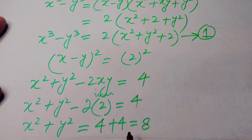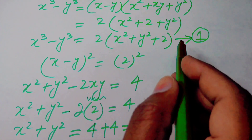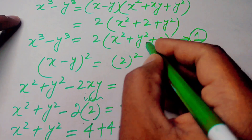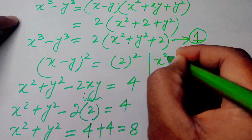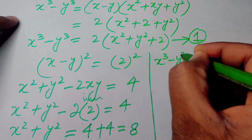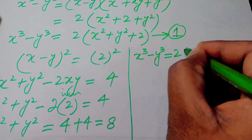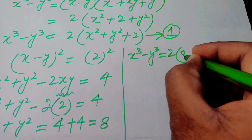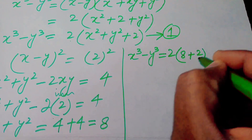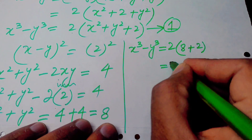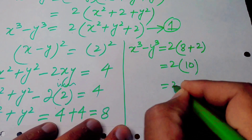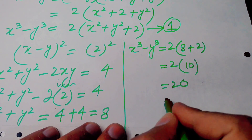Now we substitute x squared plus y squared equals 8 into equation number one. We get x cubed minus y cubed equals 2 times of x squared plus y squared plus 2, which becomes 2 times of 8 plus 2, and finally our answer is 2 times 10, which equals 20.